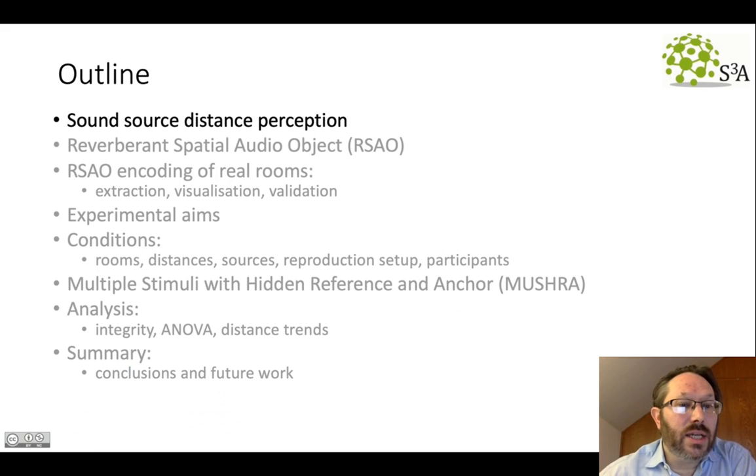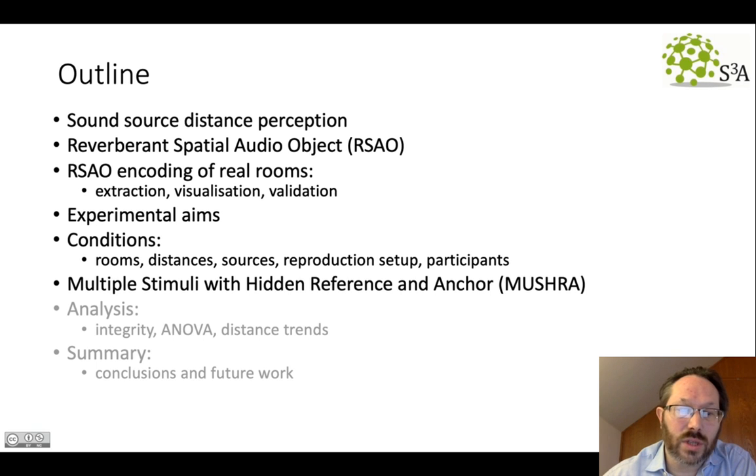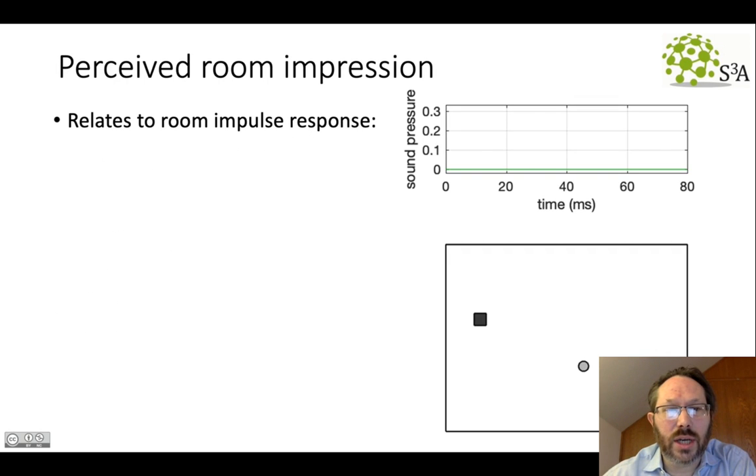The outline of my talk begins looking at sound source distance perception and the encoding in terms of the reverberant spatial audio object, which we used to encode a number of real rooms and then investigated in this experiment how that was able to cue source distance. We tested it over a range of different conditions and used a multiple stimulus interface to gather ratings from our participants. I'll provide an analysis of the results and the main trends and also the key findings and future perspectives in the summary.